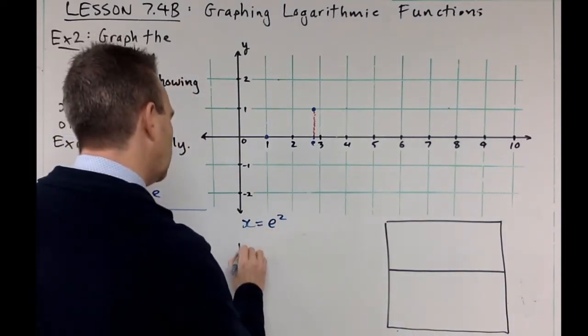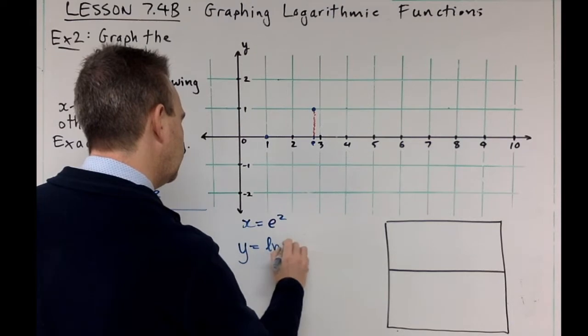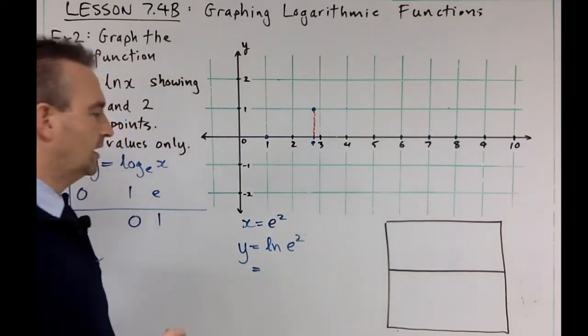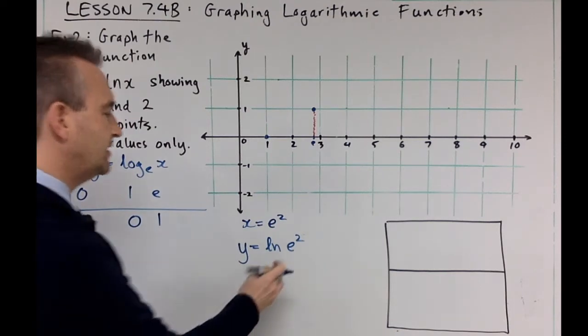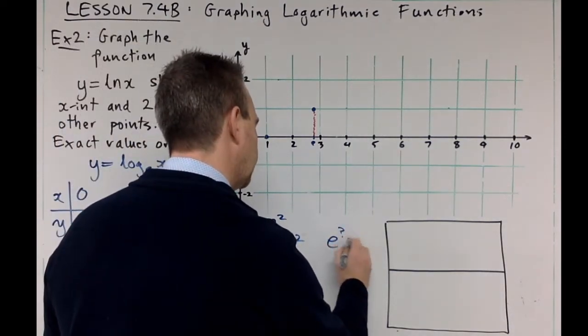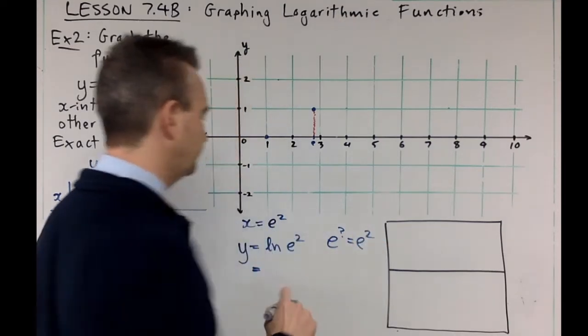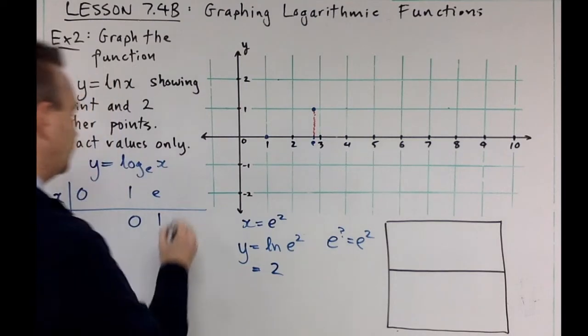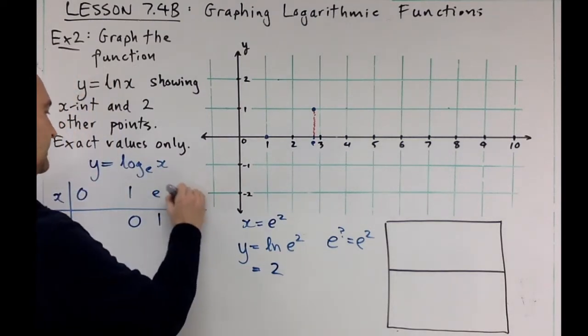So let's do that. If I do e squared, I get y equals ln e squared. What's that equal to? Well I think this came up in the lesson yesterday, so you've got to think - e to the power of what equals e squared? Obviously that must be 2 and we get the point 2. So e squared, 2.